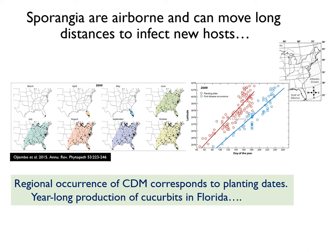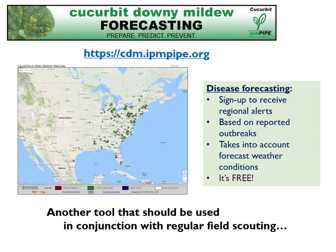However, cucurbits are produced year-long in Florida, so a constant supply of inoculum exists. Cucurbit growers and scouts are encouraged to report the occurrence of downy mildew using the IPM Pipe website, which will send out disease alerts based on reported outbreaks and forecasted weather conditions. Registration is free and alerts are sent as either an email or text message.